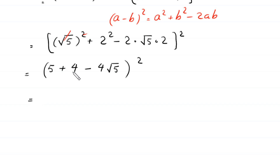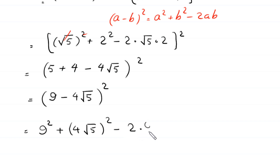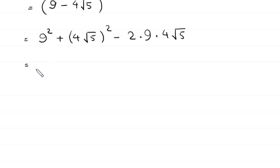Next, 5 plus 4 becomes 9, so we have 9 minus 4 times square root of 5, whole squared. Expanding using (a-b)² again: 9 squared plus 4 times square root of 5 whole squared minus 2 times 9 times 4 times square root of 5. This gives 81 plus 16 times 5 minus 72 times square root of 5, which equals 161 minus 72 root 5.